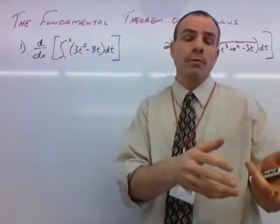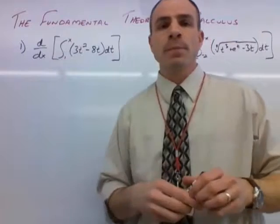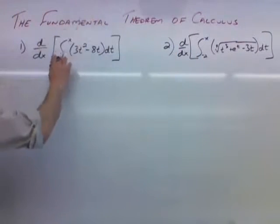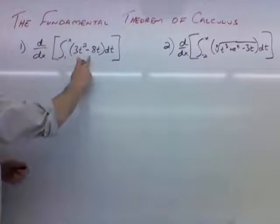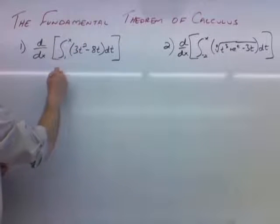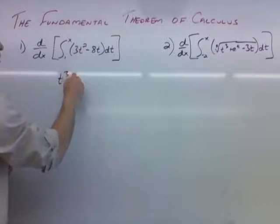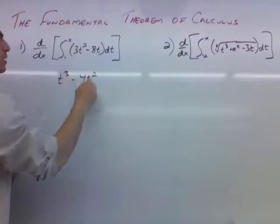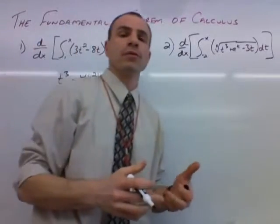So as we talked about in the previous video, watch where all this goes. We have the anti-derivative of three t squared, that's gonna be t cubed. And then eight t is gonna become four t squared. So it's using our anti-derivative rules that we've talked about.